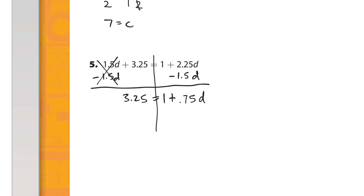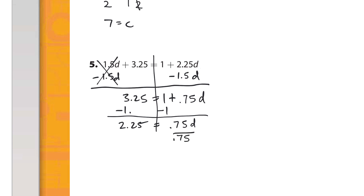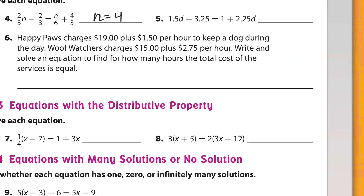Now the variables are on the right, so the constants need to move to the left. I subtract 1 from both sides — lining up the decimals — giving 2.25 equals 0.75d. Using the inverse operation, divide both sides by 0.75. 0.75 goes into 2.25 three times, so d equals 3.